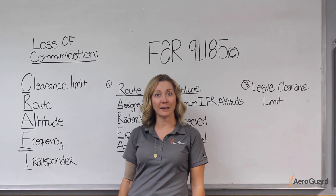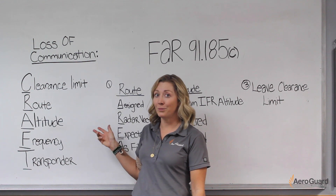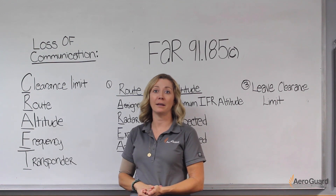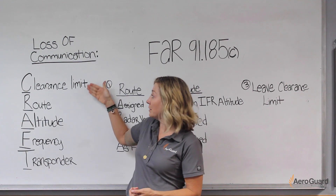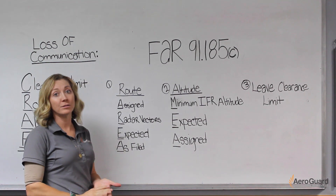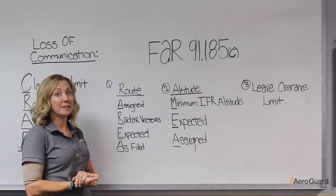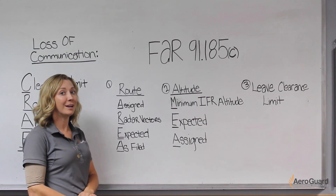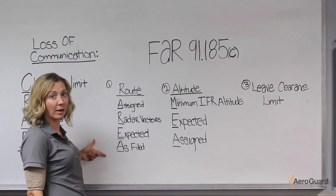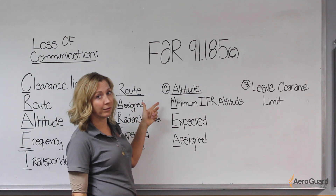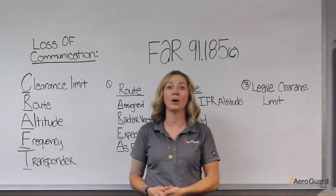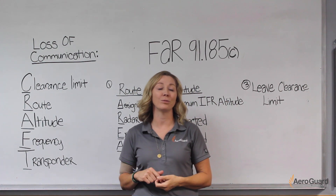There are a few components we're going to discuss today. First is going to be your clearance. When you file an IFR flight plan, you're going to get a clearance limit when you depart, and there are five main points summarized in the acronym CRAFT: clearance limit, route, altitude, frequency, and transponder code. If you lose radios or communication in actual IMC conditions, we follow regulation 91.185 Charlie, which has three main points: what route do you fly — the acronym AREA — what altitude you fly — the acronym NEA — and when do you leave the clearance limit to shoot the approach.